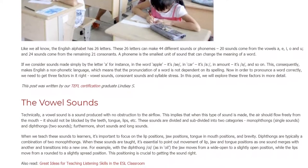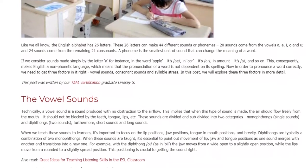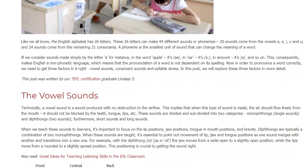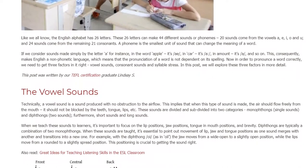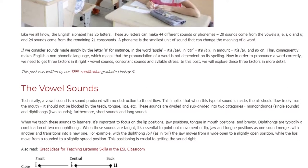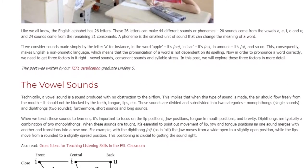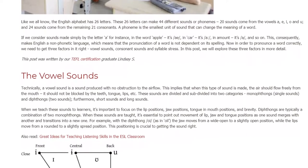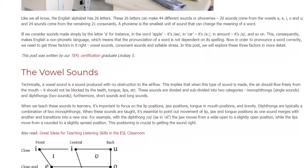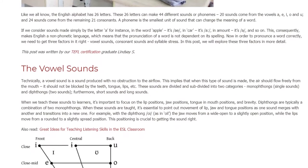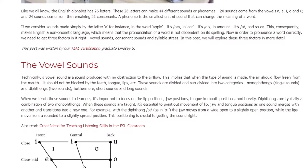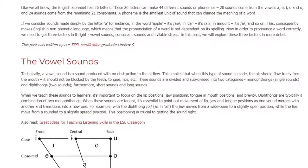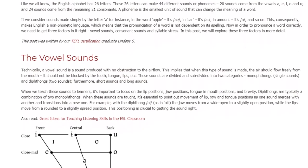The Vowel Sounds. Technically, a vowel sound is a sound produced with no obstruction to the airflow. This implies that when this type of sound is made, the air should flow freely from the mouth - it should not be blocked by the teeth, tongue, lips, etc. These sounds are divided and subdivided into two categories: monophthongs (single sounds) and diphthongs (two sounds), furthermore, short sounds and long sounds.